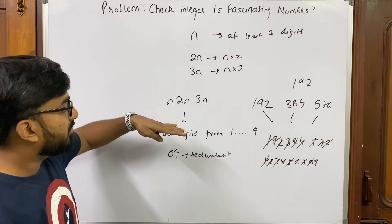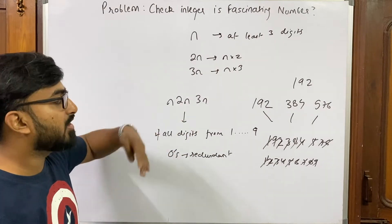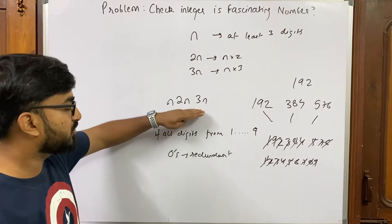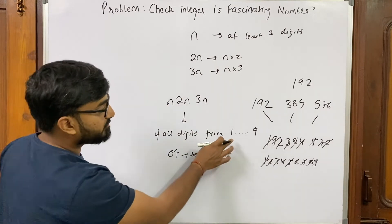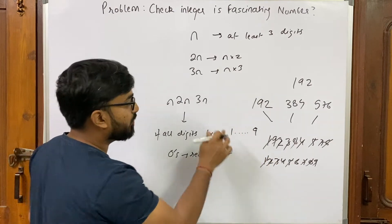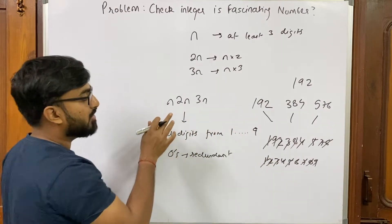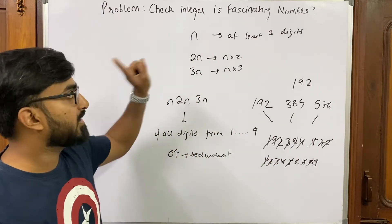We can have as many zeros as possible, or no zeros at all — zeros do not matter. All digits from one to nine should be present exactly once in the concatenated number; only then is it a fascinating number.